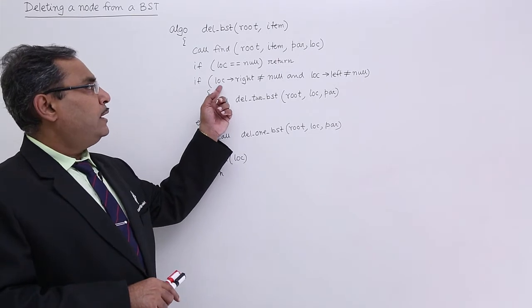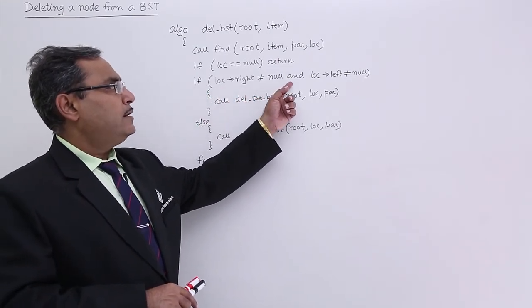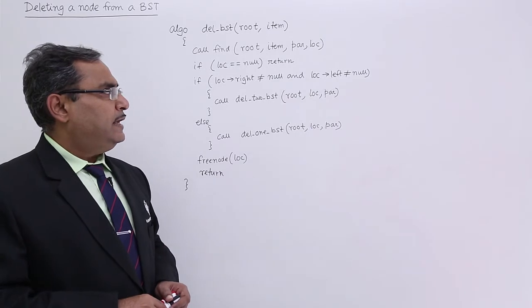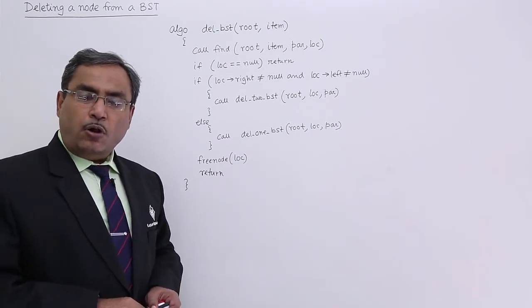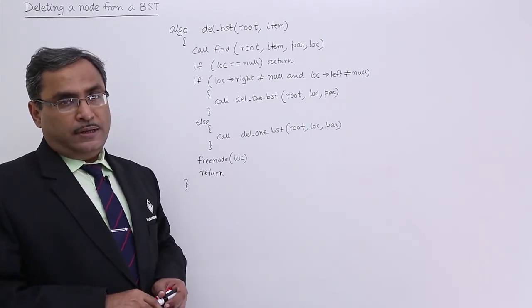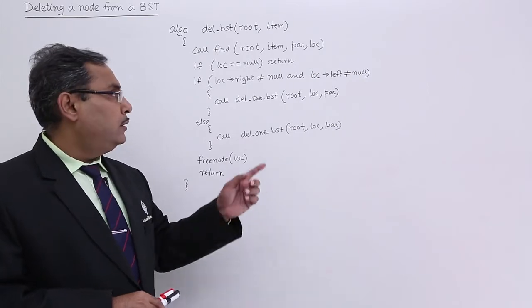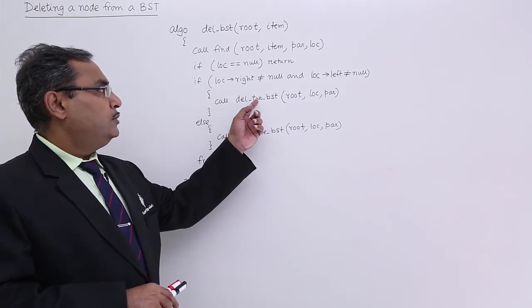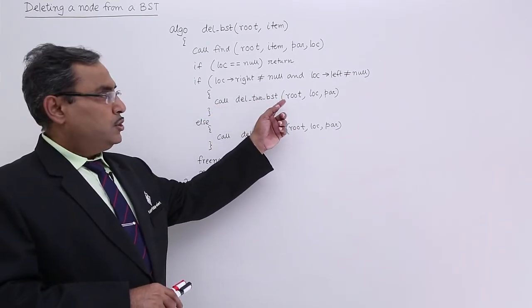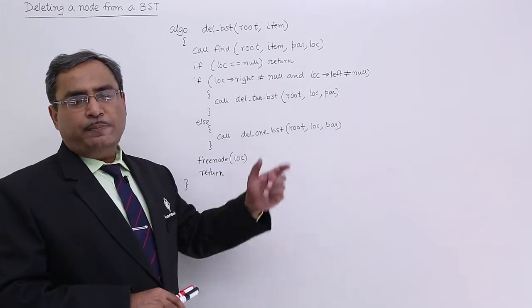If lock implies right is not equal to null and lock implies left is not equal to null that means the lock is having 2 children then which algorithm should I call? I should call del 2 BST root lock part. I am passing those parameters.